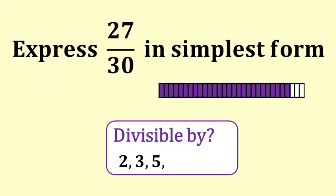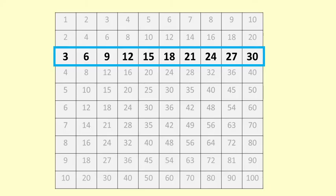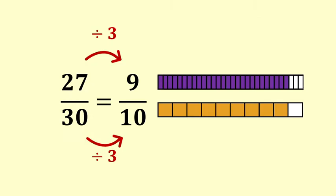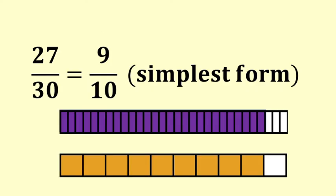Express twenty-seven thirtieths in simplest form. Two doesn't go, as twenty-seven is odd. What about three? If you're not sure you can use a calculator or a multiplication table. You look for a row that contains both twenty-seven and thirty. We can see that three goes into twenty-seven and into thirty. Divide top and bottom by three and we get nine tenths. There is no number that goes into nine and into ten, so the simplest form is nine tenths.